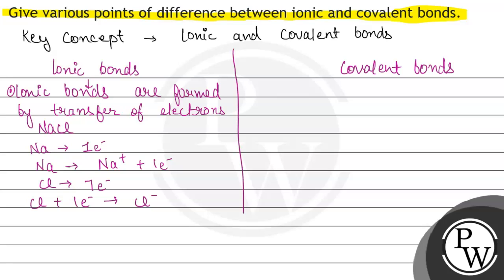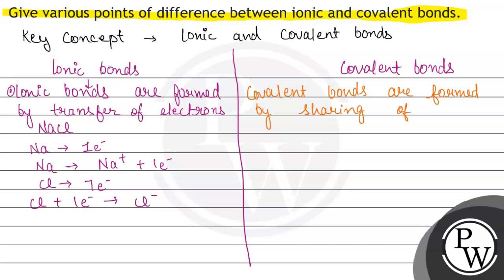Whereas in covalent bonds, bond formation happens by sharing of electrons. Let us write: covalent bonds are formed by sharing of electrons. Let us see the example.